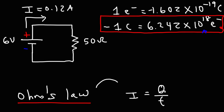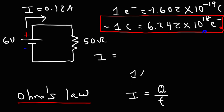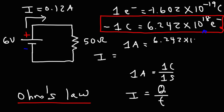Electric current I is the electric charge divided by time — the rate of charge flow. The charge tells us the quantity of electrons. So the current tells us the rate at which electrons are flowing per second. One amp equals 1 coulomb of charge flowing every second, which means 1 amp equals 6.242 × 10¹⁸ electrons flowing every second through a given wire.